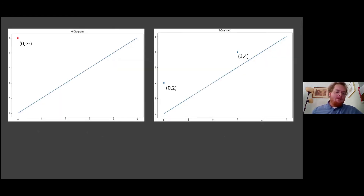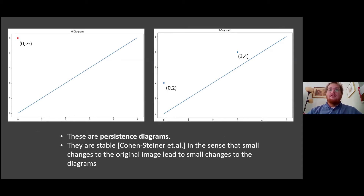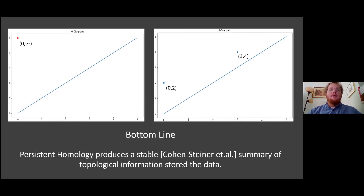Collecting this birth-death information, we can visualize it by plotting it in the plane. This collection is called a persistence diagram — a visualization of the topological information extracted from persistent homology. Persistence diagrams are stable in the sense that if I change the image a little bit, the diagrams change only a little bit. The bottom line is that this is a stable summary of topological information stored in the data.